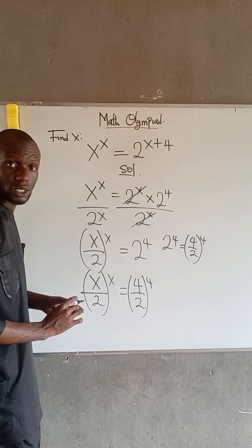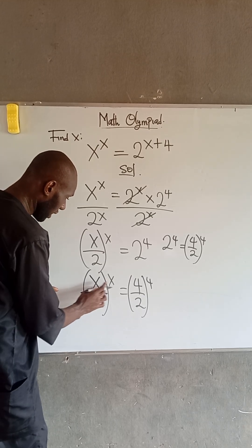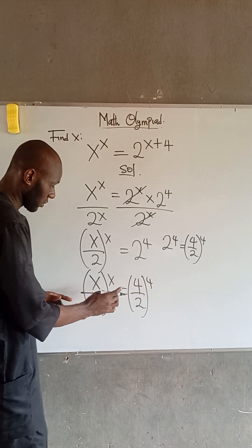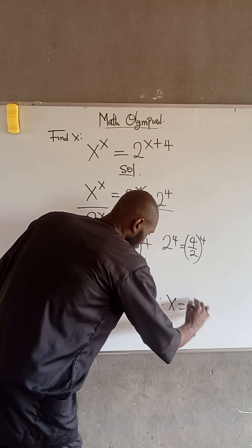Now, if you look at this equation now, you will find out that x here is equal to 4. So, therefore, we have that x is equal to 4.